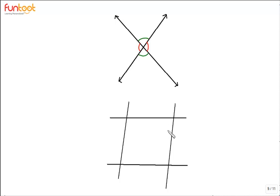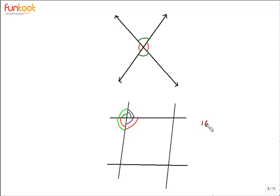Let's take one more figure. Can you count the number of pairs of adjacent angles here? We can see there are four intersection points. Around the first point, this angle is adjacent to this, this angle is adjacent to this, this angle is adjacent to this, and this angle is adjacent to this. So at one intersection point we have four pairs of adjacent angles, meaning in all we will have 16 pairs of adjacent angles.